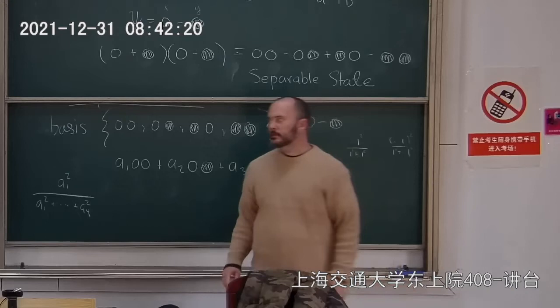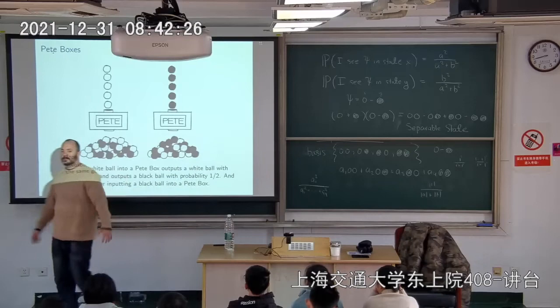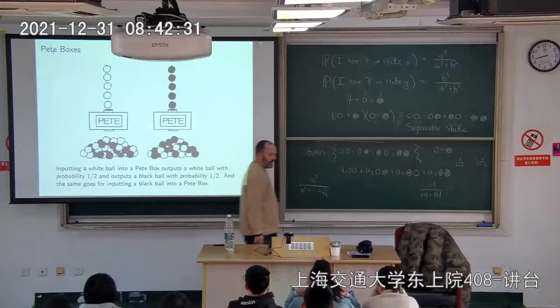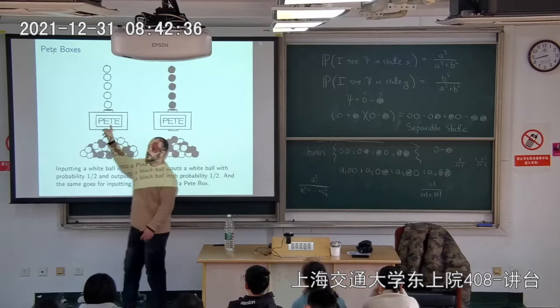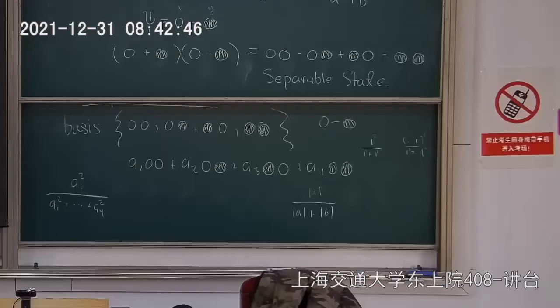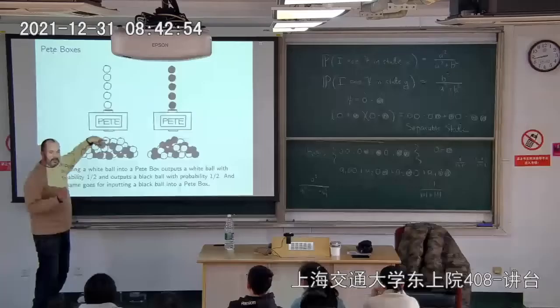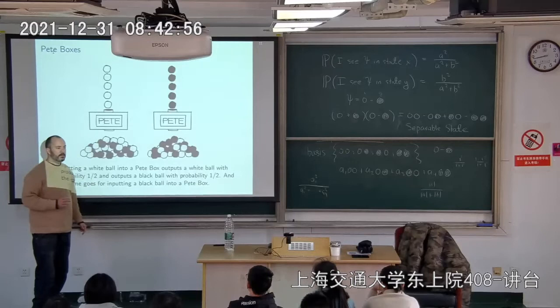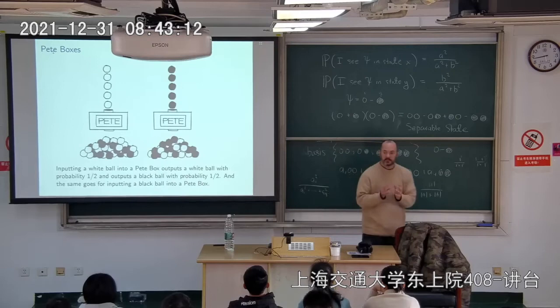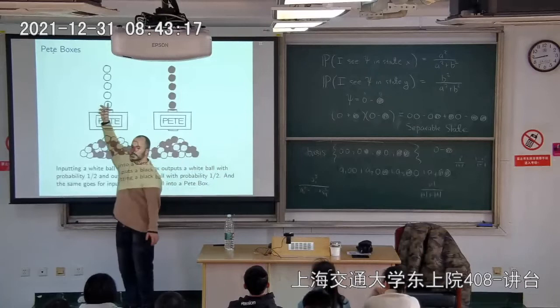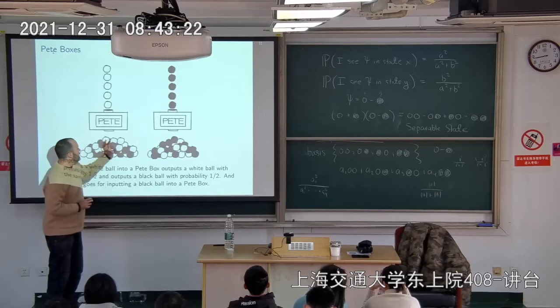Now we're going to start getting towards quantum computing. There's something called the peat box, built by some guy named Pete. When you put white balls through a peat box, they come out either black or white with 50% odds — half the time white, half the time black. Same thing for black balls — half the time white, half the time black.